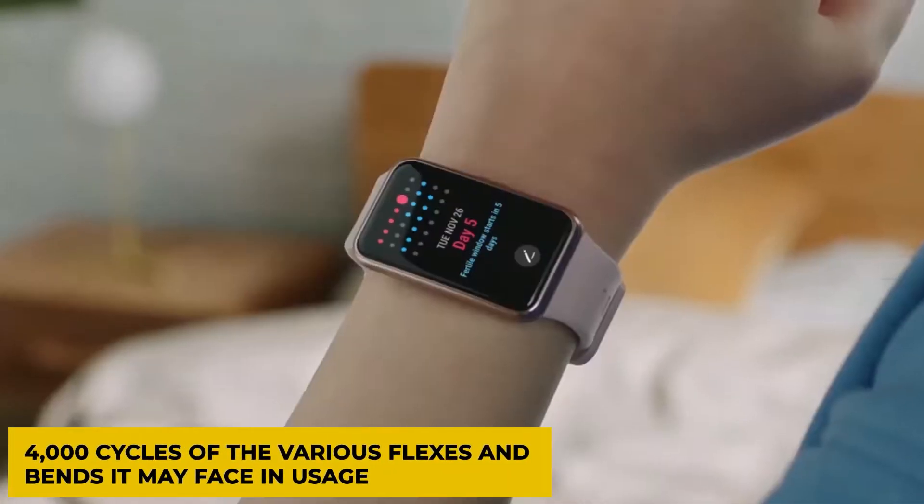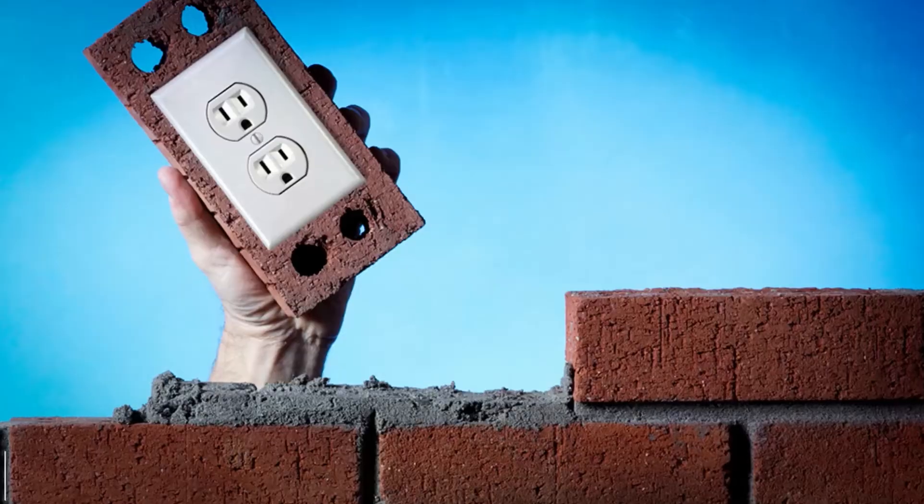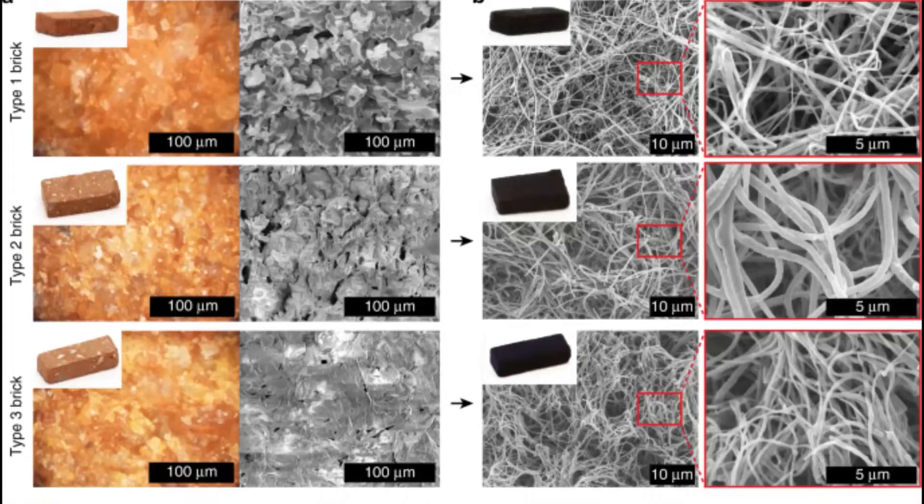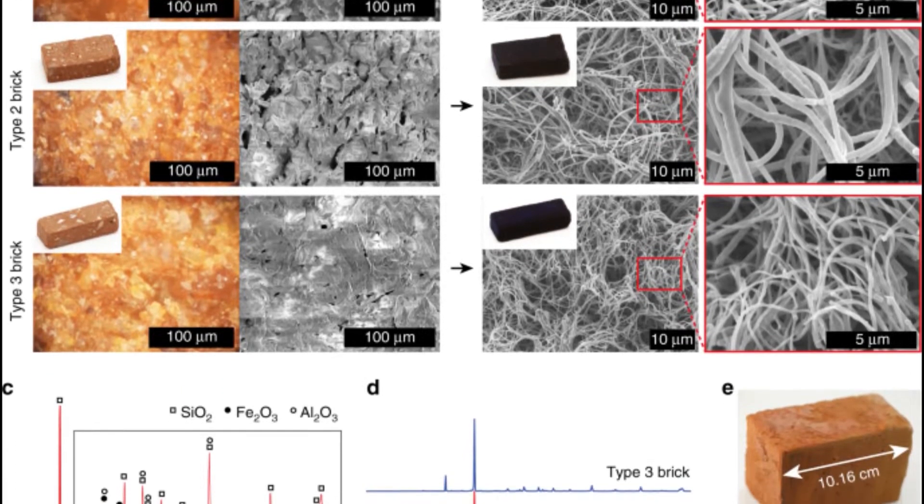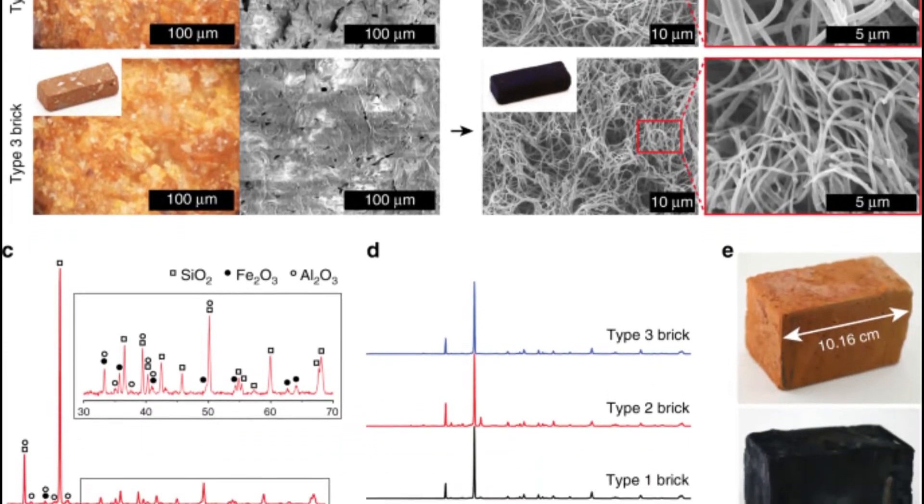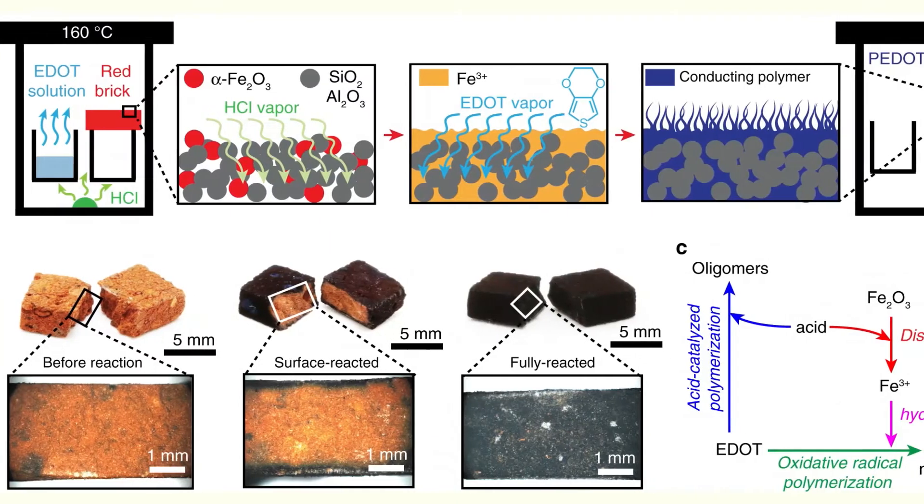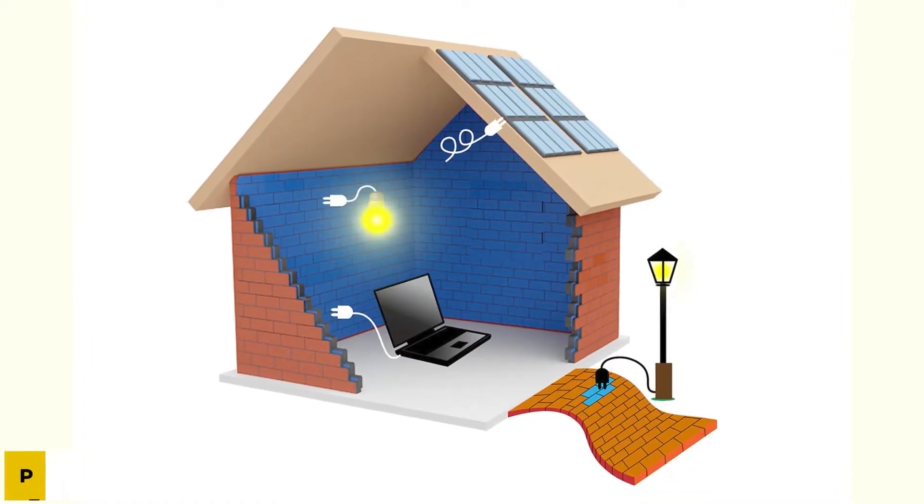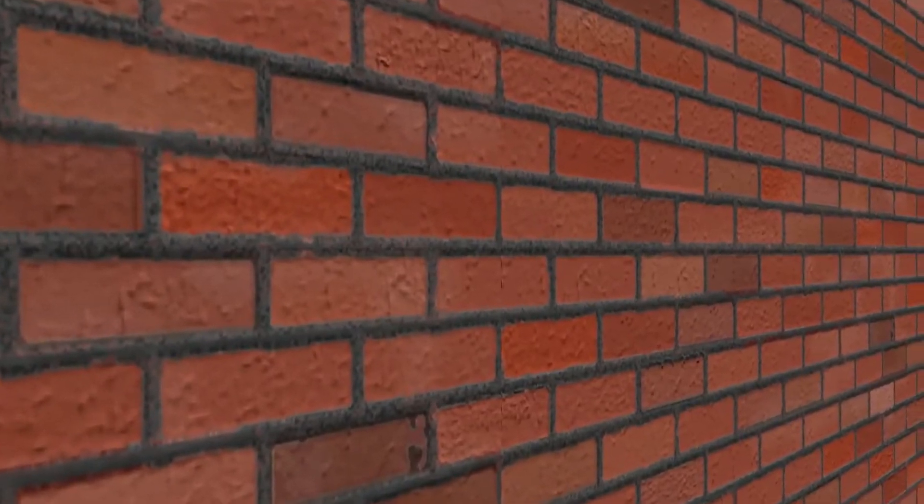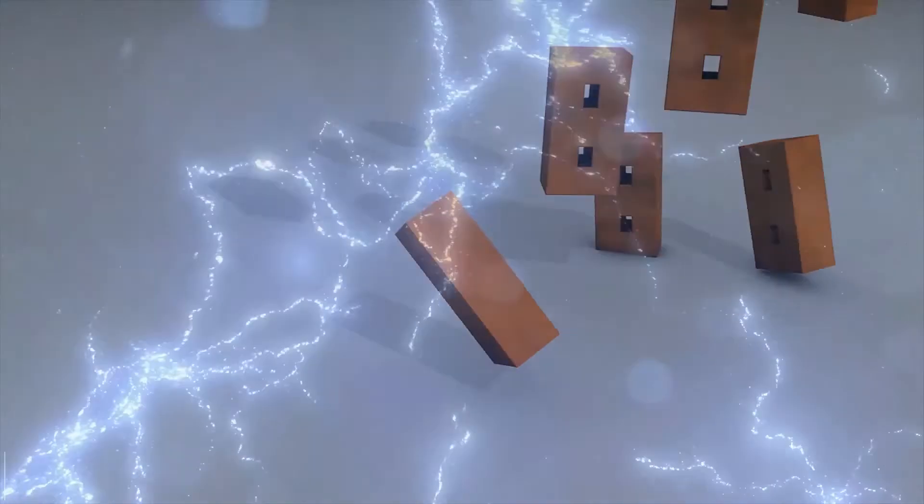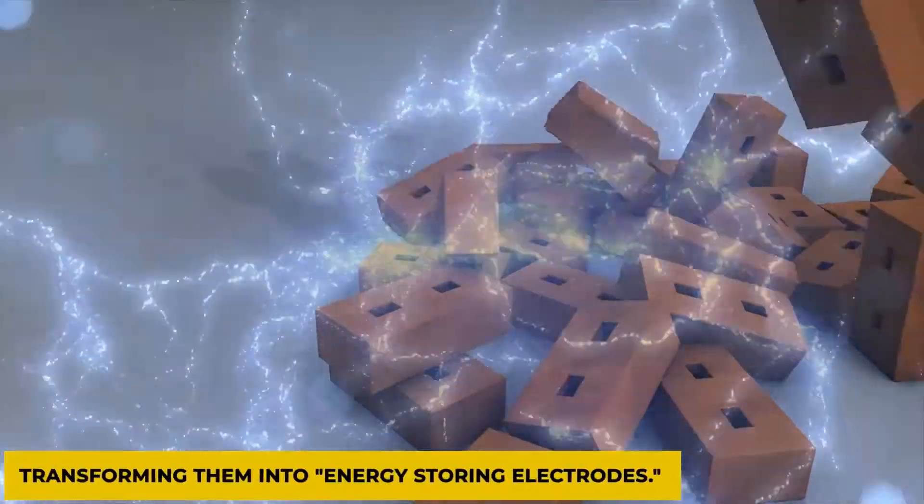Number 2: Energy-Storing Bricks. Scientists have discovered a technique to store energy in the red bricks used to construct buildings. Known as a supercapacitor, this necessitated applying a conducting coating known as P-DOT on brick samples, which seeped through the burnt bricks' porous structure, transforming them into energy-storing electrodes.